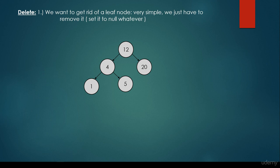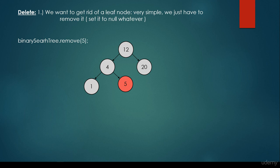Let's consider the first one, where we want to get rid of a leaf node. It's very simple — we just have to remove it, for example set it to null. First we have to search for the item we would like to delete. We start at the root node; five is smaller so we go to the left, five is greater than four so we go to the right, and this is the item we would like to get rid of. We just set it to null — we set the five's parent, which is four, right child to be equal to null.